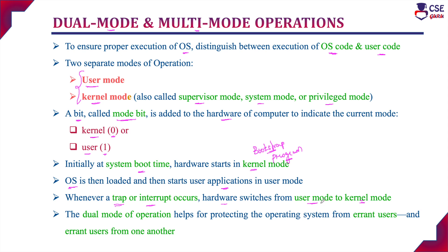Generally, a process will execute in user mode only. Only when an interrupt or trap is raised will the hardware switch from user mode to kernel mode. User mode value is 1, kernel mode value is 0 — that is the mode bit value. When switching from user mode to kernel mode, the mode bit value changes accordingly. The dual mode operation helps to protect the operating system from erroneous users.